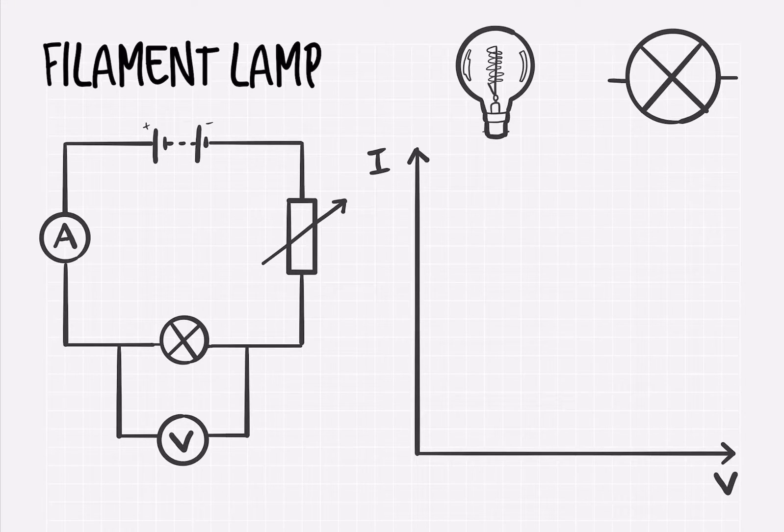Now the IV curve for the light bulb is a little bit different to the resistor, and in fact it looks a bit like this.